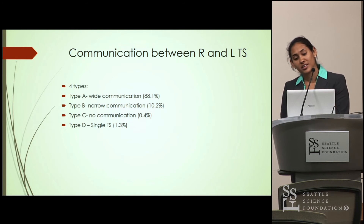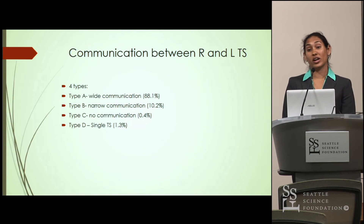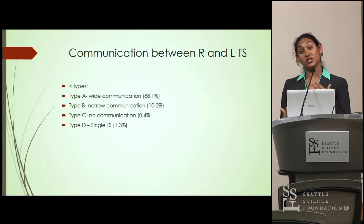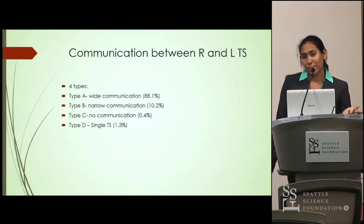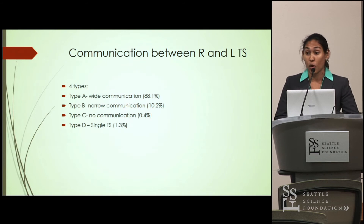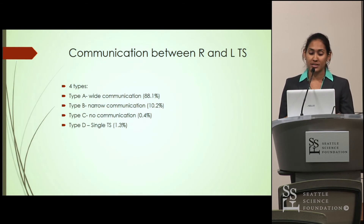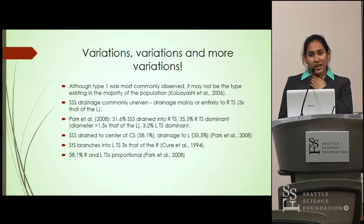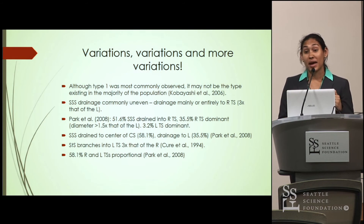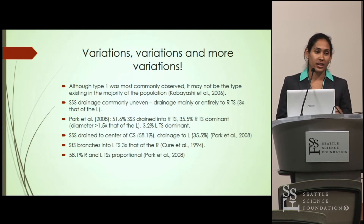Another important topic is the type of communication between the right transverse sinus and the left transverse sinus. There are four simple types: Type A is a wide communication, which the majority of the population has. Type B is a narrow communication. Type C is no communication. Type D is a single transverse sinus, like our patient had. There are many variations depending on where the sinuses drain and connect.